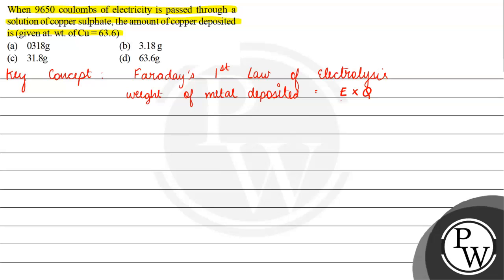Where E is the equivalent mass. The equivalent mass of copper is the atomic mass divided by valency factor. The atomic mass divided by valency factor will be 63.6 divided by 2.